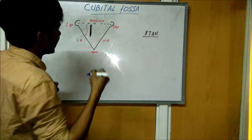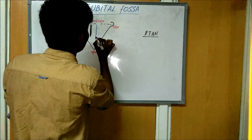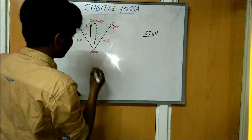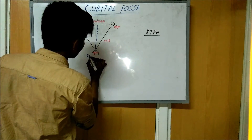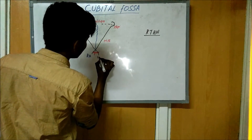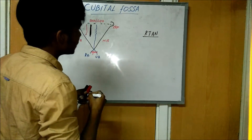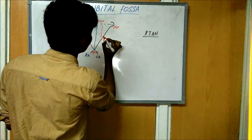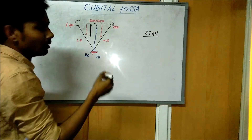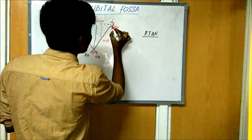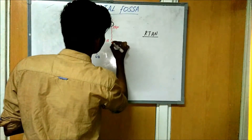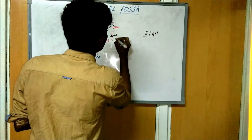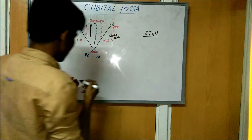The third structure is the brachial artery, located in the medial side. It continues to the apex and makes two branches: one is the radial artery and one more is the ulnar artery. The fourth one is the median nerve. And behind the medial epicondyle, you can see the ulnar nerve.